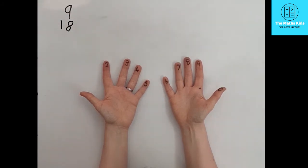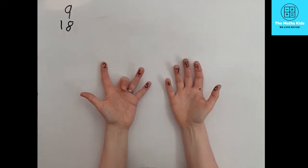If you want to work out 3x9, put down finger 3. There are 2 fingers on the left hand side and 7 fingers on the right hand side. So 3x9 is 27.